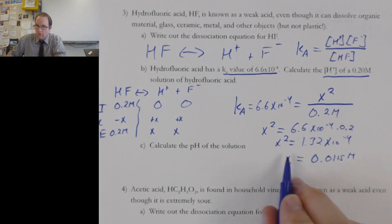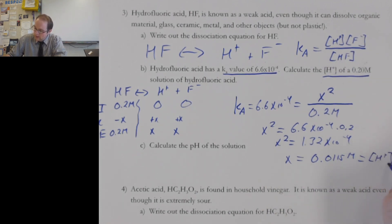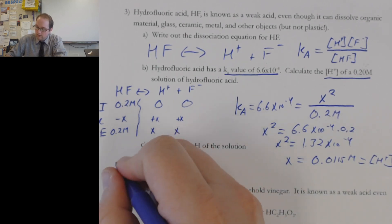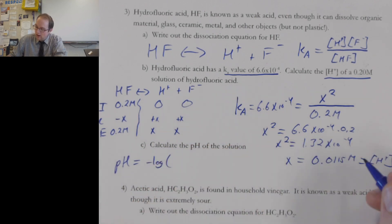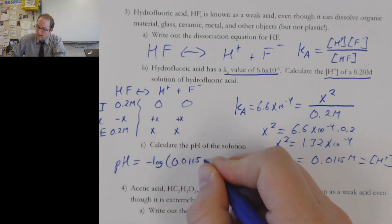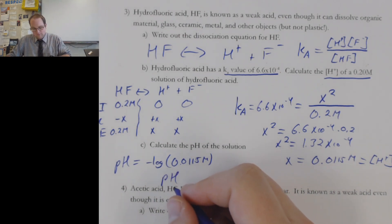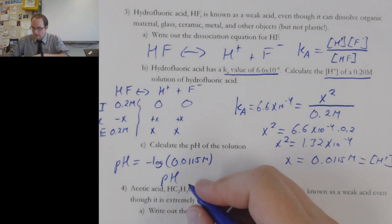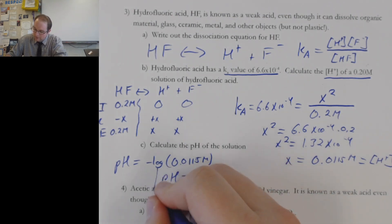This is, of course, going to be equal to our H plus concentration. Why do we care about that? Well, because our problem part C here, it asks us to calculate the pH of the solutions. We know that pH is equal to the negative log of our H plus concentration, which in this case ends up being the 0.0115 molar. And I end up with a pH of this problem of 1.94 for my final answer.